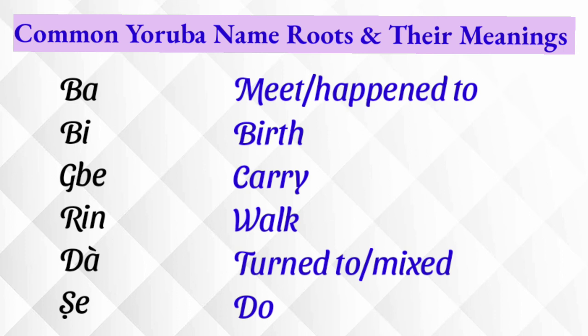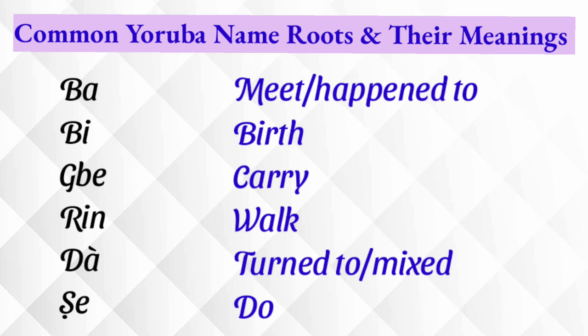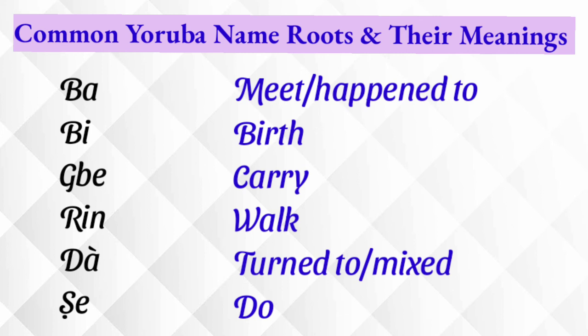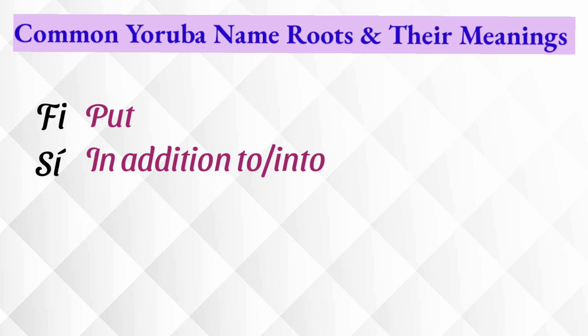The next set of Yoruba name roots are verbs or action words. Ba means 'meet' or 'happen to' — for example, Ayobami means joy has met with me or happened to me. Be means 'birth' — Bisola means to birth into wealth. Gbe means 'carry' — Gbemisola means carry me into wealth. Re means 'work' — Omoride means the child that worked into your life or family. Da means 'turn to' or 'mixed with' — Ayodamola means joy is mixed with wealth. She means 'do' — Oluwashemilori means the Lord has done me good.